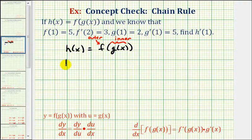Which means h prime of x, our derivative function, is equal to the derivative of the outer function, evaluated at the inner function, which would be f prime of g of x. This is the derivative of the outer function, times the derivative of the inner function, which would be g prime of x.